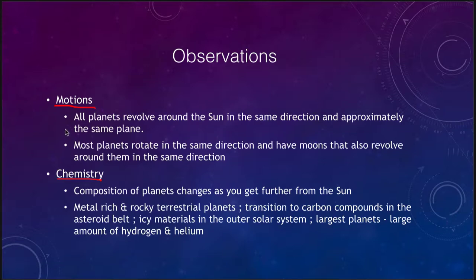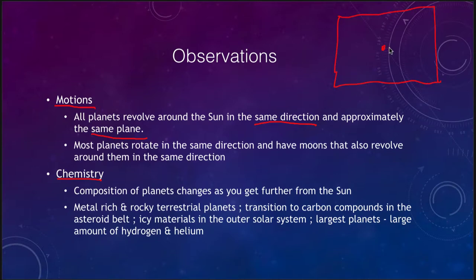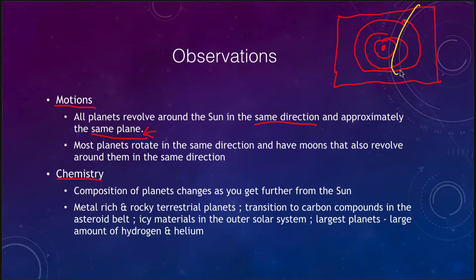First of all, we see that all of the planets revolve around the Sun in the same direction and in approximately the same plane. Essentially, when you've drawn a model of the solar system on a piece of paper, it's a very good approximation of what the solar system actually does. It may not be to scale, but in terms of how flat it is, that's what we mean by being in the same plane. You don't have planets coming in at all different random directions above or below around the Sun like a comet's orbit — everything is essentially in the same plane.